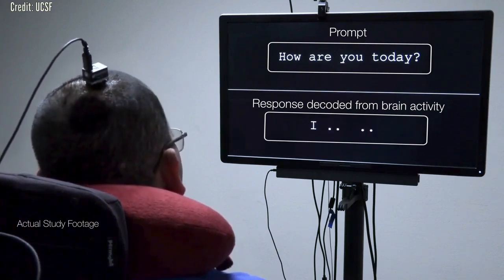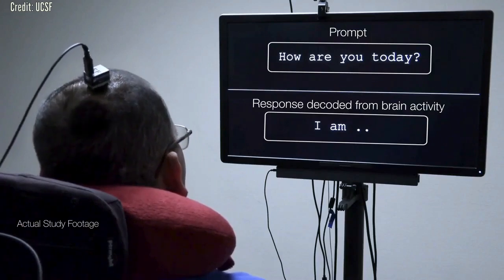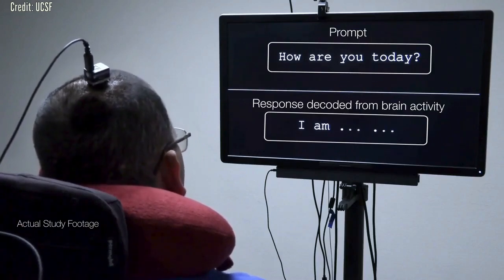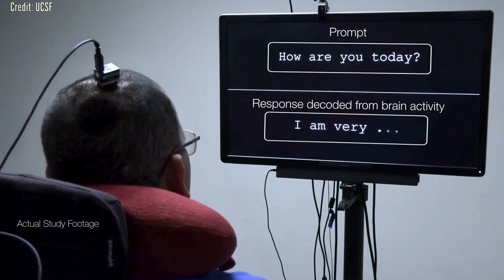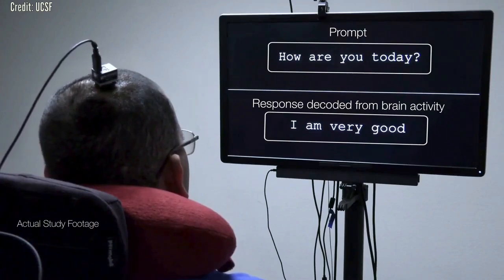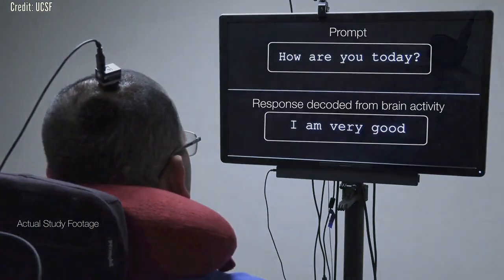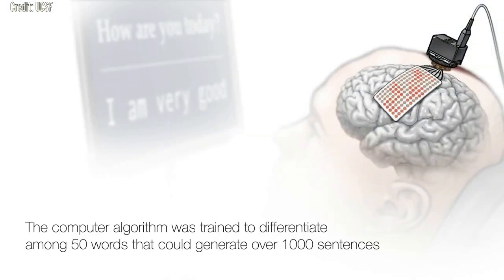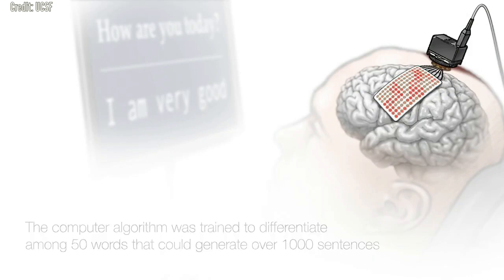Since his injury, he has had extremely limited head, neck and limb movements, and communicates by using a pointer attached to a baseball cap to poke letters on a screen. The participant, who wants to be referred to as BRAVO-1, worked with the researchers to create a 50-word vocabulary that Chang's team could recognize from brain activity using advanced computer algorithms.